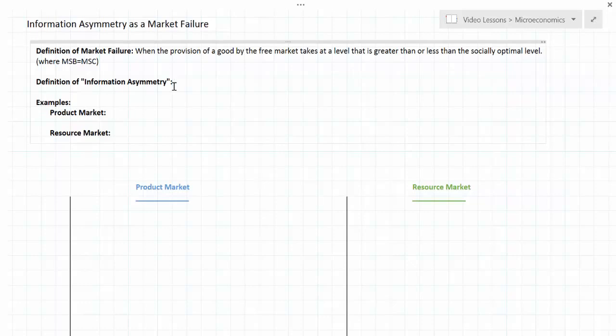Information asymmetry is a little bit different than these other types of market failure. It has not to do with the externalities associated with the goods production or consumption, rather the information that the buyers and the sellers know about the good when they provide it to the other party in the marketplace.